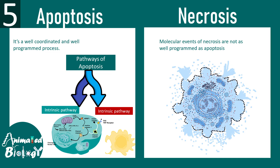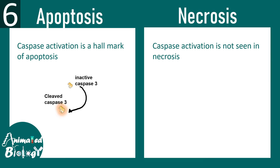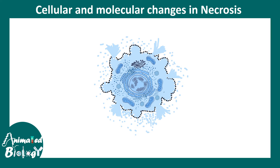In apoptosis there are well-coordinated, well-defined pathways — the intrinsic and extrinsic pathways — orchestrated by specific molecular mediators. In necrosis, the molecular events are not very well-defined and the process is not as programmed. There is some molecular involvement in necrosis, but it is not well-coordinated. In apoptosis, whether extrinsic or intrinsic pathway, the executor caspase — specifically cleaved caspase-3 — is the key player. Caspase activation is never seen in necrosis.